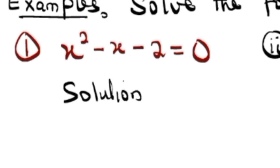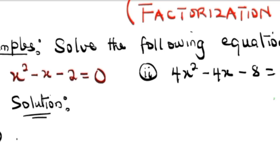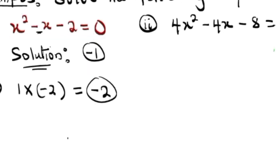What you do is multiply the coefficient of x² with the constant term, so we have 1 times -2, which is -2. Now find two factors of -2 such that when you multiply them you get -2 and when you add them you get the coefficient of x, which is -1. The factors -1 and 2 multiply to give -2.